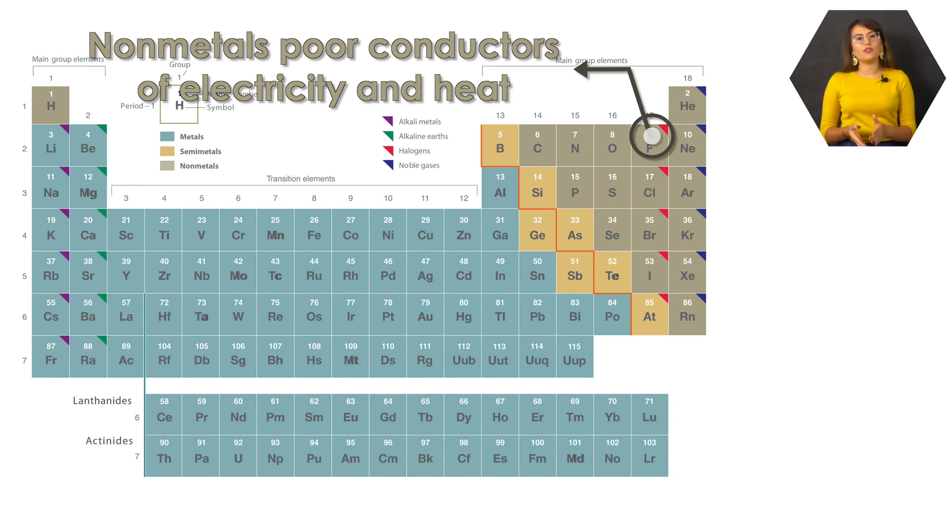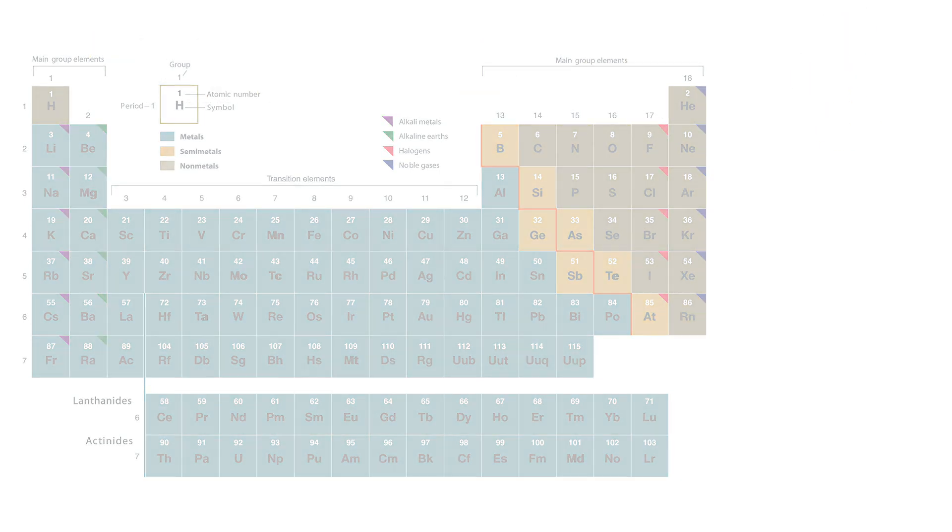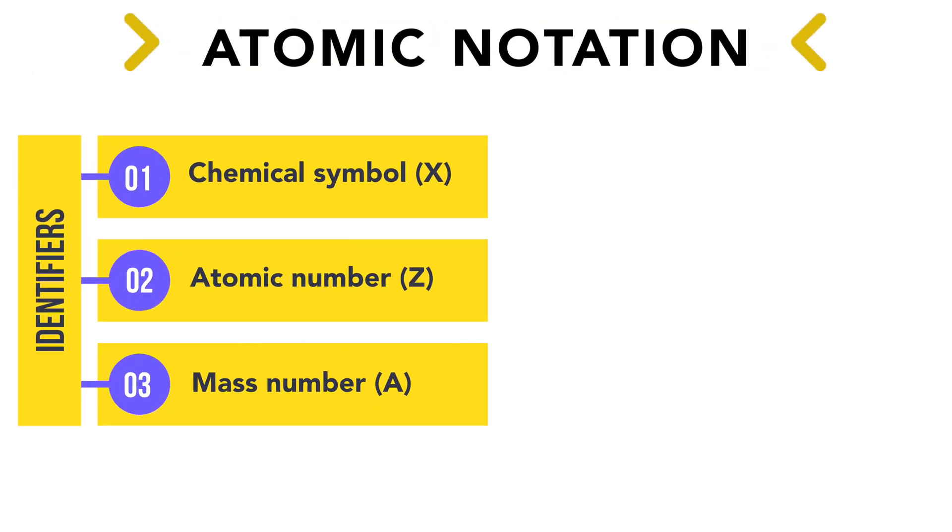When it comes to individual elements, the periodic table can tell us quite a lot, as we have already mentioned. Most periodic tables contain at least three pieces of information for each element. First, it tells us the chemical symbol for that element, which is denoted by one or two letters.